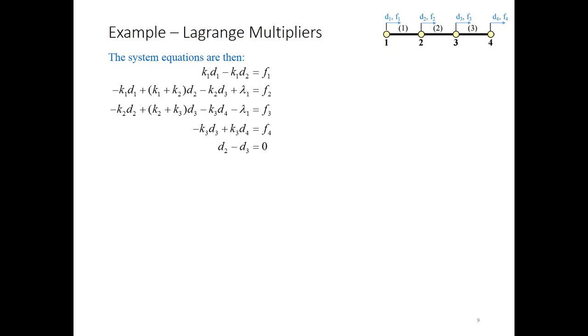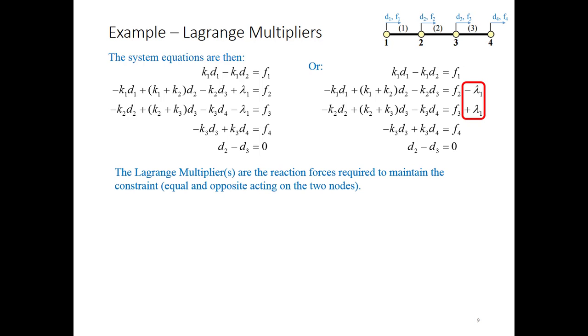If we were going to work through the solution of this, we could write out that matrix equation as a system of linear equations, and then we'd find that we can put all our degrees of freedom on the left-hand side and the forces on the right-hand side. Lambda1s would go to the right-hand side, and we can see that those are the two reaction forces required to maintain the constraint. In other words, equal and opposite forces acting on the two nodes.